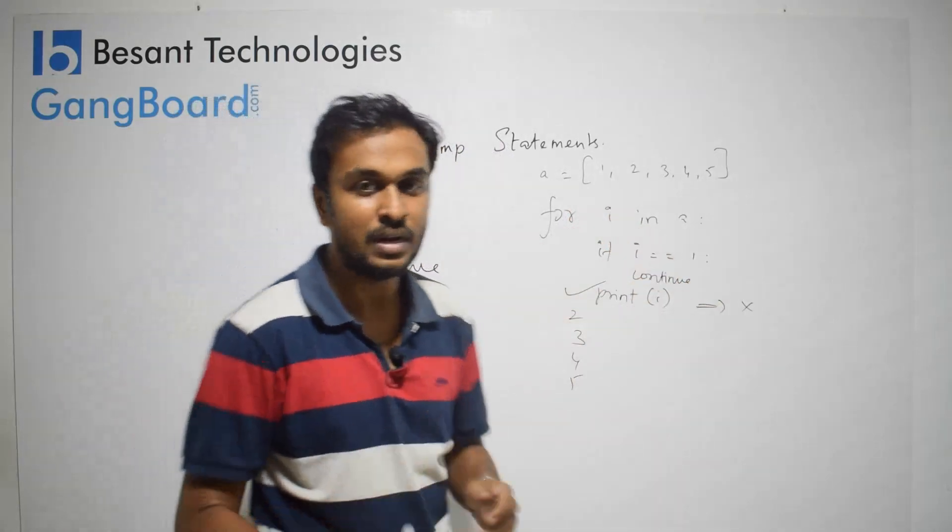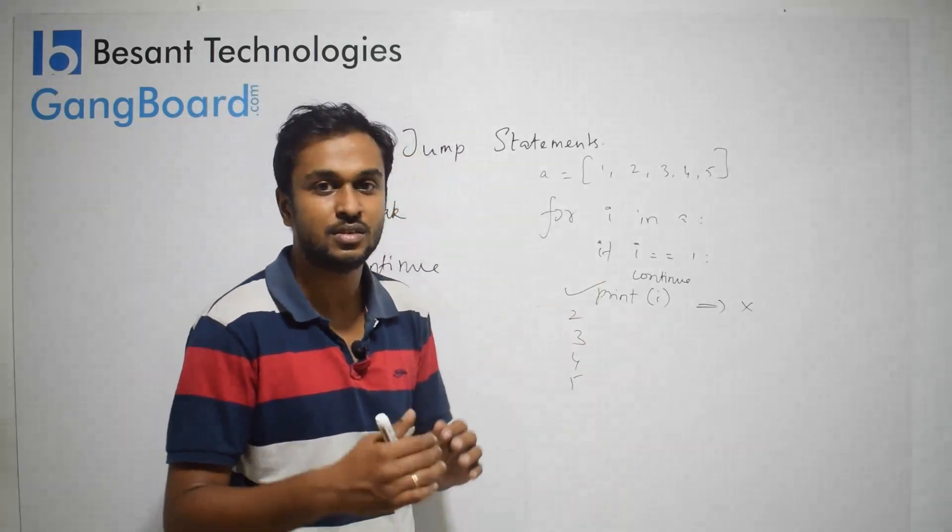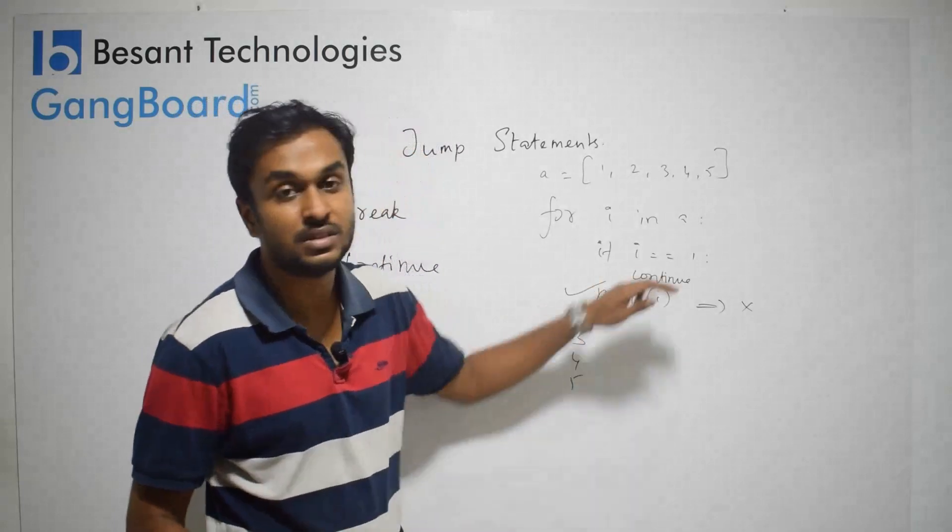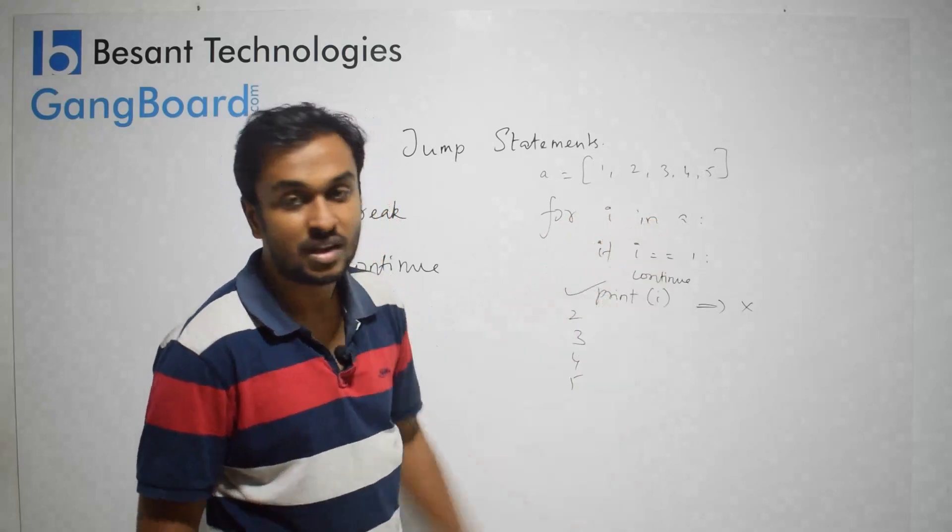So this is the major difference. Break completely terminates the loop. Continue, when it satisfies the condition, doesn't execute further statements in the for loop, but rather goes back to the starting point. This is continue.